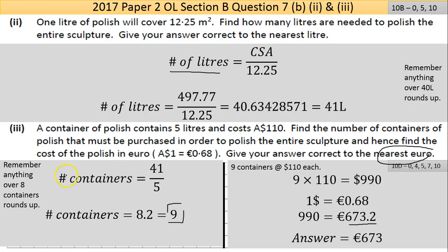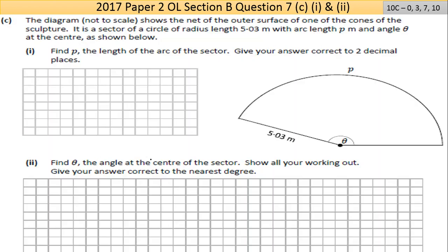We're on Question 7c part 1. The diagram, not to scale, shows the net of the outer surface of one of the cones. This is an important concept—it's a net, so you need to know how to draw nets of different shapes. The net is a sector of a circle.